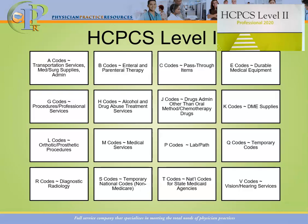For the letter B, we have enteral and parenteral therapy codes. Here you'll find codes for things like Ensure — the nutritional drink — including a code for Ensure that can be given to the patient via a G-tube. The codes that start with the letter C are for hospital outpatient payment systems, and those are what are known as pass-through items related to the outpatient prospective payment system.